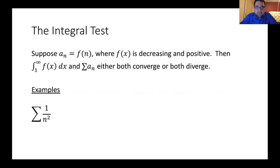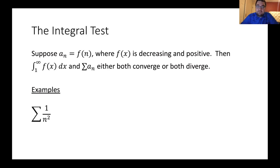The next test is called the integral test. The integral test says: suppose the terms of my series a_n equal some function of n — call it f(n) — where this function is both decreasing and positive. Then the improper integral from one to infinity of f(x) dx and the series of a_n either both converge or they both diverge. The integral test allows you to turn this problem about series convergence or divergence into a problem about integral convergence or divergence.